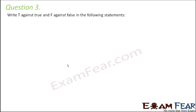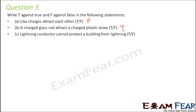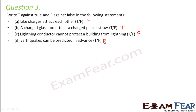Question number 3: True or False. Like charges attract each other — this is false because they repel. A charged glass rod attracts a charged plastic straw — this is true. Lightning conductor cannot protect a building from lightning — this is false; lightning conductors on top of buildings allow extra charges to pass through them and protect the building. Earthquakes can be predicted in advance — that's why we are not able to provide foolproof protection against earthquakes.